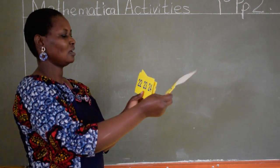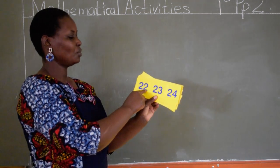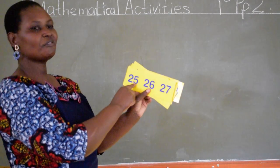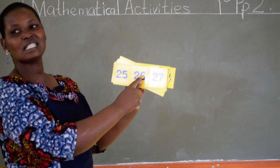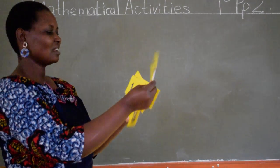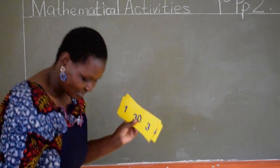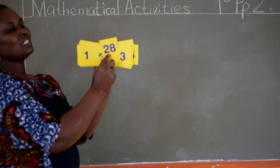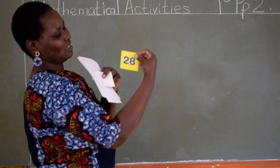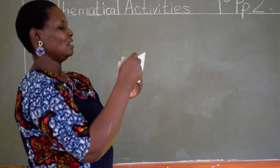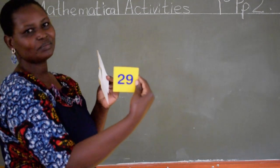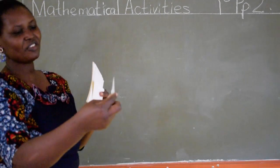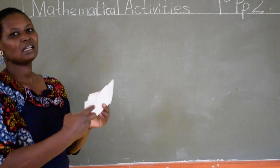21, 22, 23, 24, 25, 26, 27. Then from number 27 we have number 28. Can you say 28? 28, 29. Then number 30. From number 30 we move to number 31.